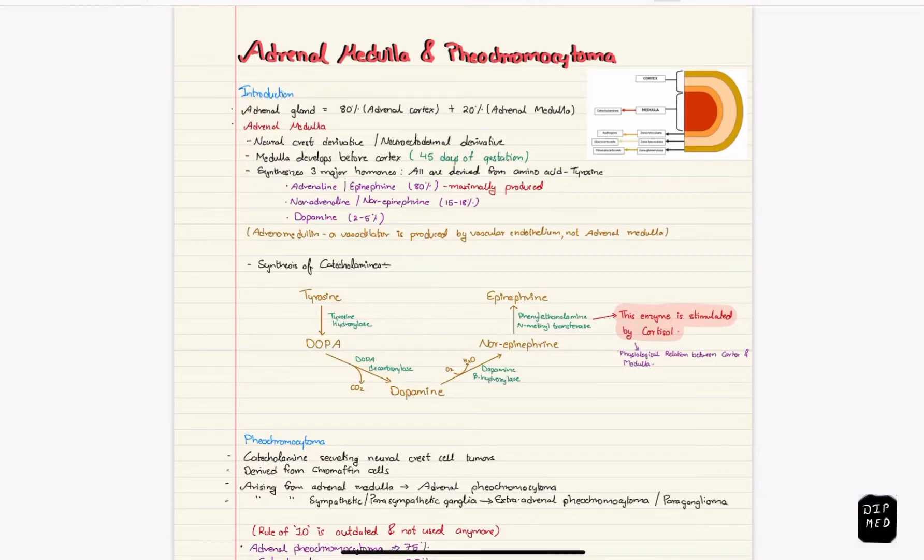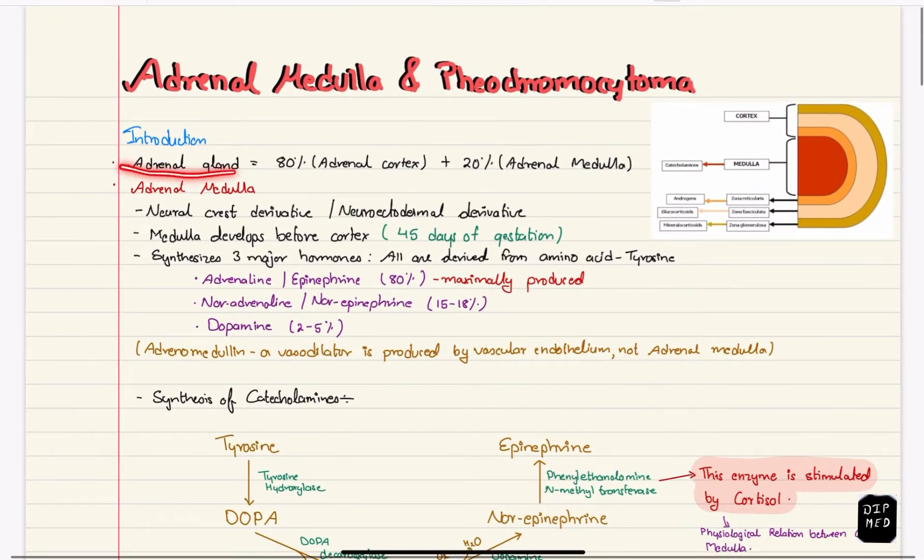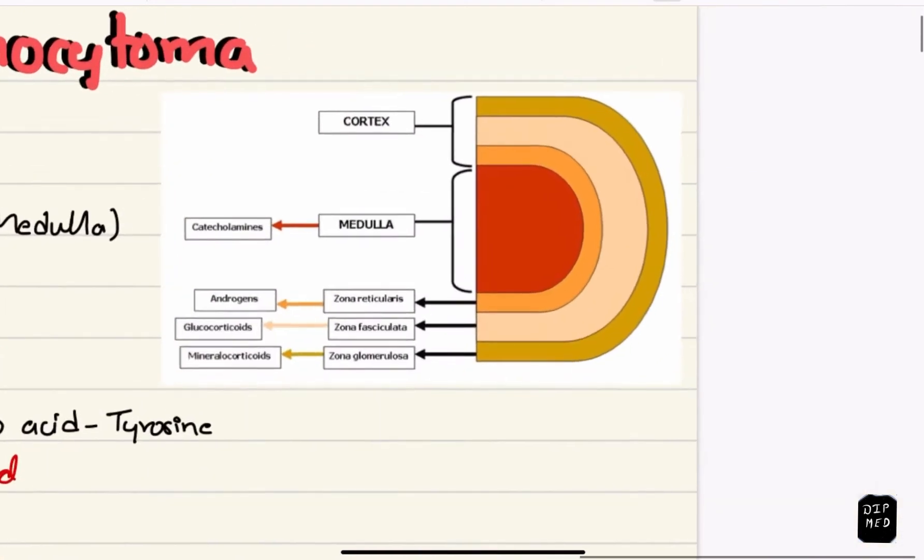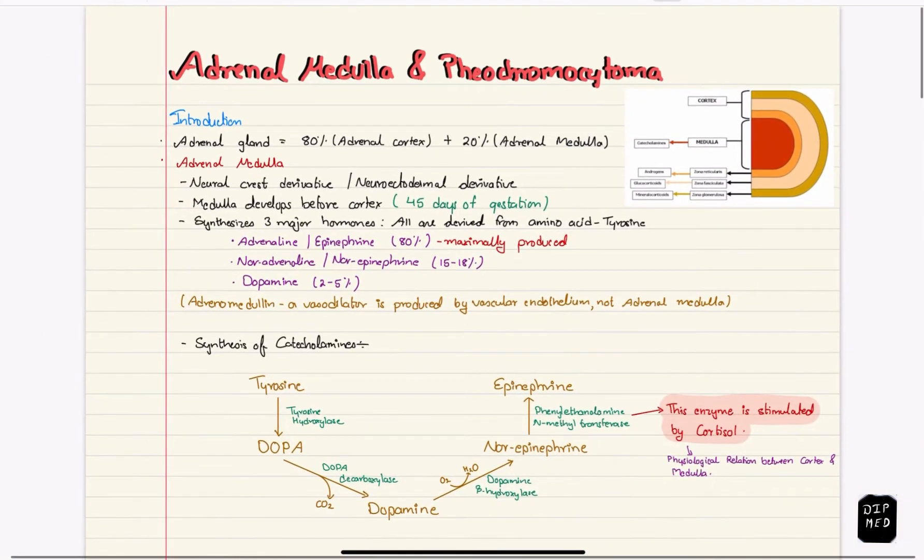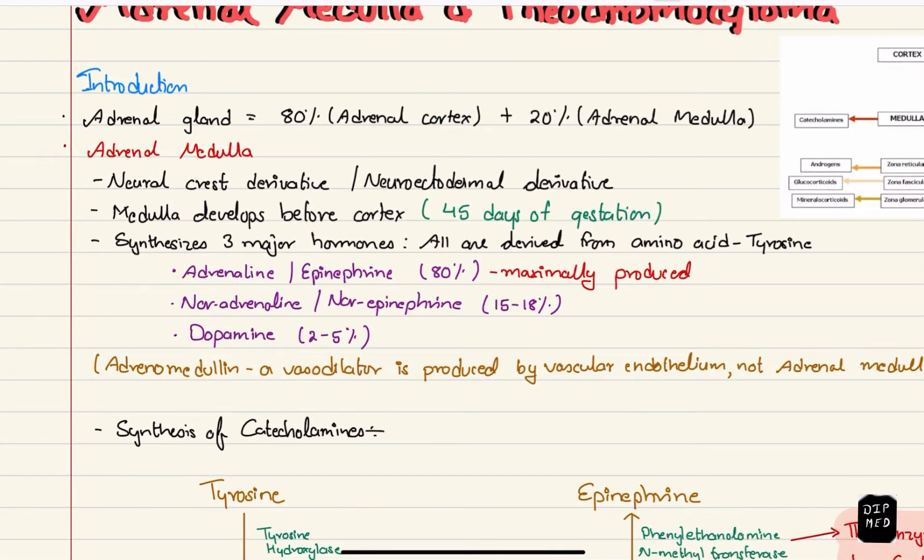In this video we'll be talking about pheochromocytoma, but before that let's briefly learn about adrenal gland. Adrenal gland is made up of adrenal cortex which constitutes about 80% of adrenal gland and adrenal medulla which constitutes about 20%. Here in this picture you can see the medulla which is surrounded by the cortex on the outer side. But now we're only concerned about adrenal medulla because it is from where the tumor pheochromocytoma arises. Adrenal medulla is a neural crest derivative or neuroectodermal derivative. Medulla develops before the cortex at around 45 days of gestation and it synthesizes three major hormones all of which are derived from the amino acid tyrosine.